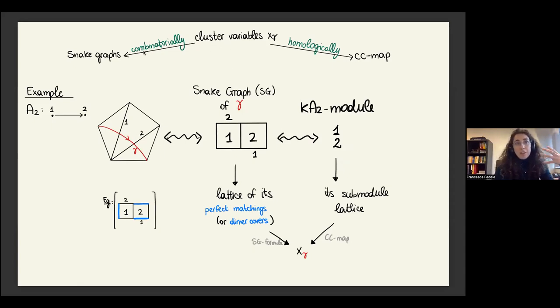Instead of going through this iterative process, which can be very complicated and time consuming, you can do it directly, either combinatorially using snake graphs which are associated to the diagonals in your polygon, or homologically through CC maps which are applied to the indecomposable modules over K. For example, if you look at A2, this corresponds to a pentagon with some initial triangulation. You can look at one of the diagonals like this gamma and build your snake graph, where each tile is obtained by gluing together two of the triangles in your triangulation.